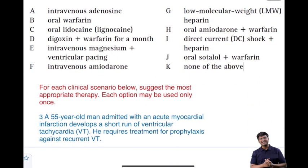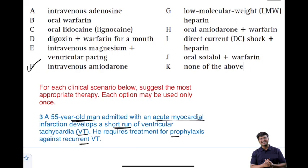The third important scenario: a 55-year-old man admitted with an acute myocardial infarction develops a short run of VT and requires treatment for prophylaxis against recurrent ventricular tachycardia. For prophylaxis of VT in a patient with acute MI, the drug to give is amiodarone. Among the options, search for amiodarone — it is not warfarin.